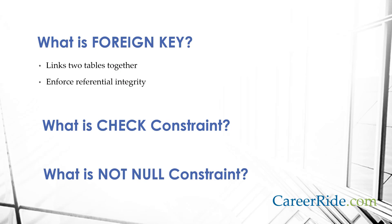What is a foreign key? A foreign key is a key used to link two tables together. A foreign key in one table points to a primary key in another table. They are used to enforce referential integrity, which prevents any actions that would destroy links between tables with the corresponding data values.